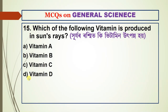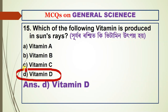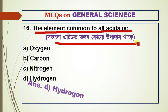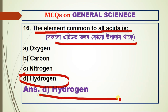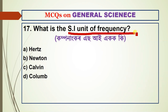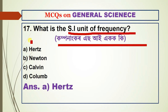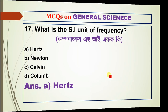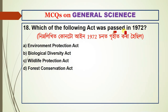Question number fourteen: which type of noble gas is used for unconsciousness? Question number fifteen: which vitamin is produced when exposed to sunlight? The answer is vitamin D. Question number sixteen: what is the element common to all acids? Question number seventeen: what is the SI unit of frequency?